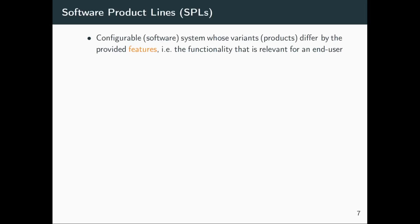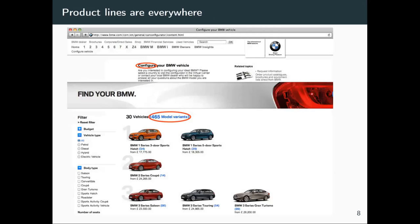As background on software product lines: configurable systems are systems whose variants differ by specific features — a piece of functionality that can be distinguished by an end user or stakeholder. These are everywhere. For example, when buying a VW online, you can configure your vehicle. There are 30 vehicles with 465 model variants, because you can choose coloring, tire type, and everything, even though core features remain the same.